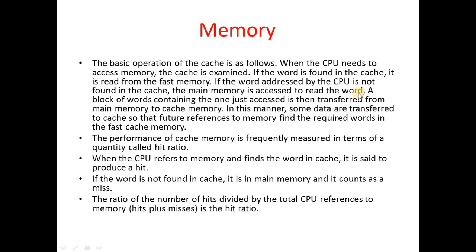When we access main memory on a cache miss, we read the word and also load it into cache so that if the CPU needs it again, it will be found in cache and can be read quickly from there.